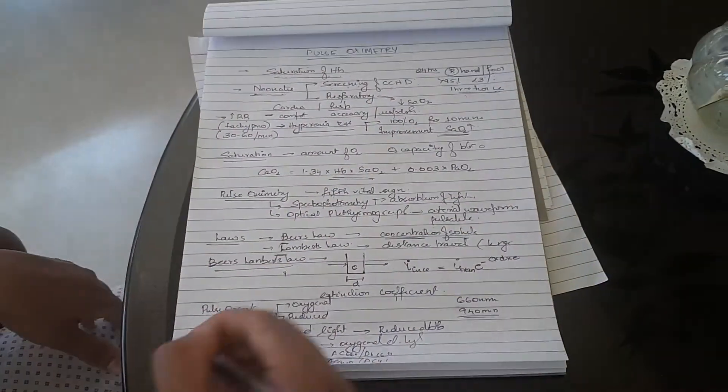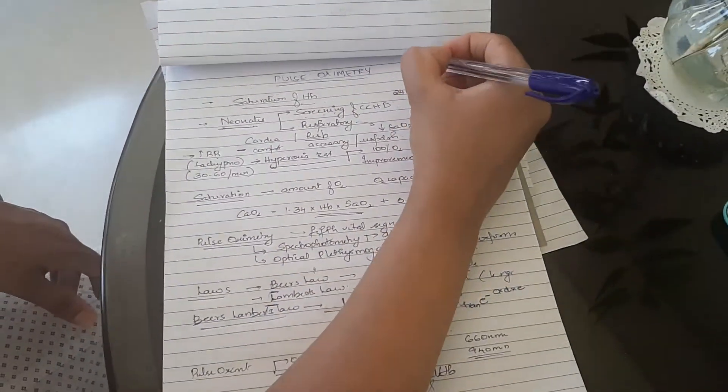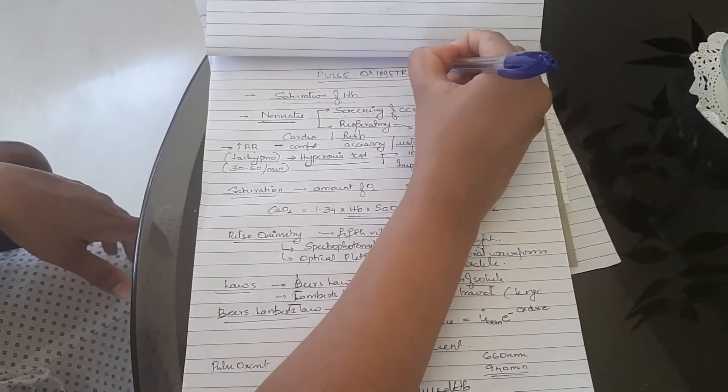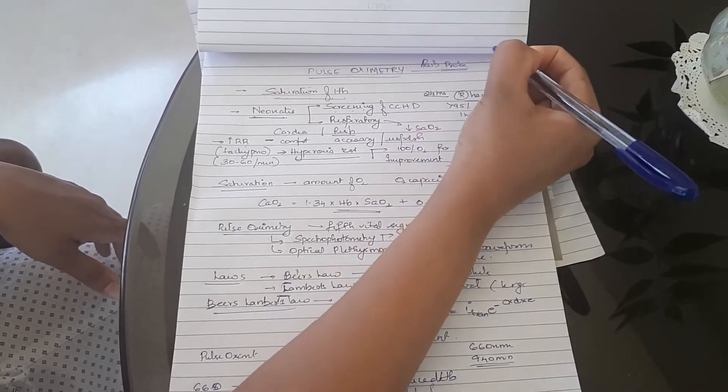So this is the basic idea of how pulse oximetry functions. Now what are the advantages? No, what are the parts? Parts of pulse oximetry: the probe which contains what?